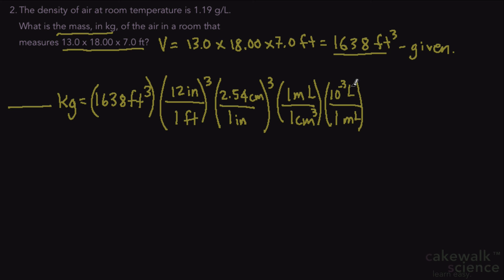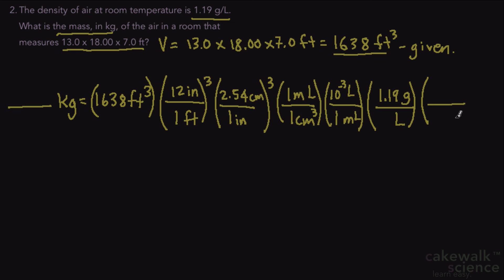Now that we have liters, we want to find the mass, so we use density as a conversion factor. We know that 1.19 grams of air equals one liter, because the density is 1.19 grams per liter. Then to get from grams to kilograms, we use the prefix conversion where one kilogram equals 10 to the 3 grams.